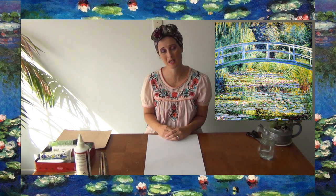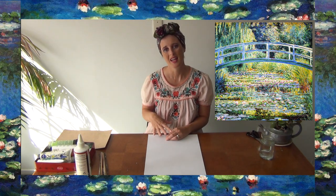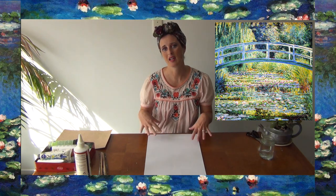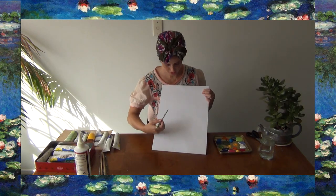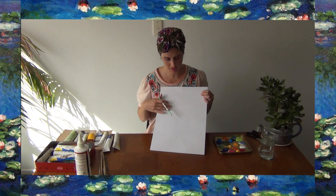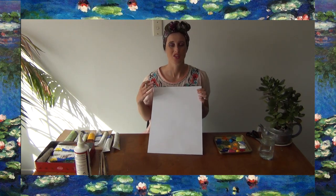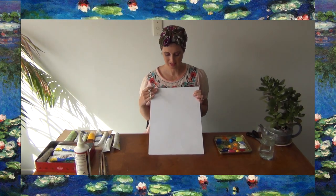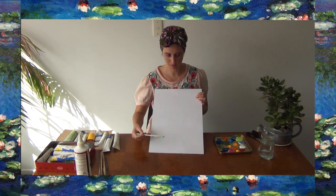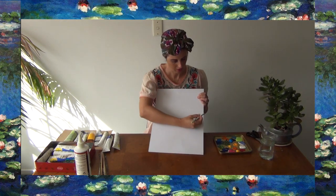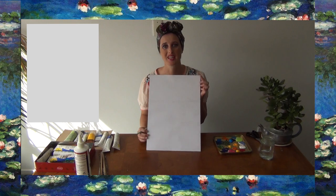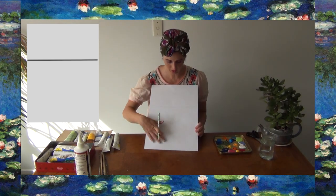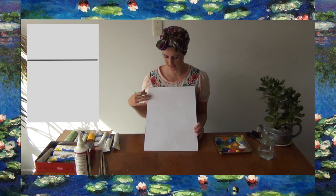We're going to begin with working on the water and the trees and sky area in the background. We're not going to worry about the bridge or the flowers just yet — we're going to add those on afterwards. To begin with we're just going to section off which area of our page is going to be the trees and which part is going to be the pond. The pond is the bottom section, so we're just going to draw a bit of a line across the page. This is the water and this is more of the trees and sky area.